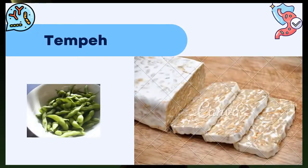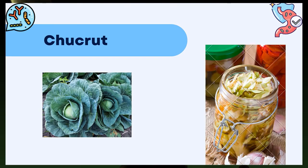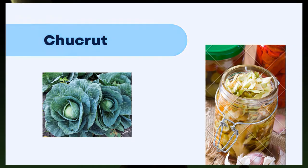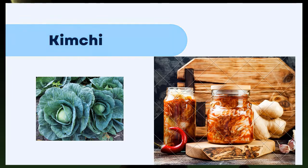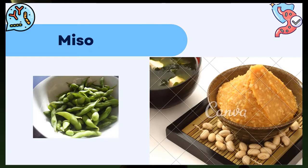Los orígenes del tempeh son hindúes; se obtiene de la fermentación de la soya y puede comerse de múltiples maneras: salteado, horneado o crudo en ensaladas. Es muy utilizado en dietas veganas como el perfecto sustituto de la carne. El chucrut es un alimento probiótico que se obtiene a través de la fermentación de la col blanca o el repollo; su sabor es ácido y tiene una textura crujiente. El kimchi se obtiene a partir de la fermentación de vegetales, principalmente de la col; en Corea suele consumirse con frecuencia como acompañamiento de carnes y pescados, con ajo y pimiento, de ahí su sabor picante. El miso es una pasta elaborada a partir de la fermentación de soya, sal y koji; su textura es cremosa, tiene un aroma parecido al café y sabe a carne, siendo la sopa de miso uno de los platos más conocidos de la gastronomía asiática.